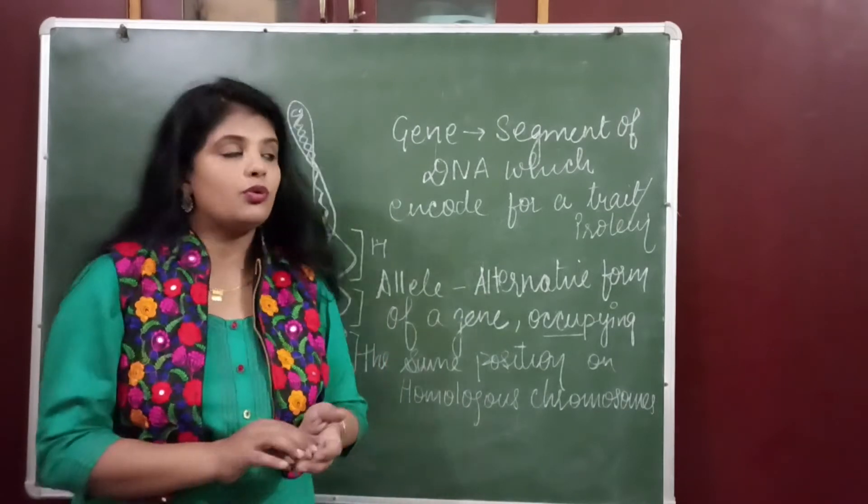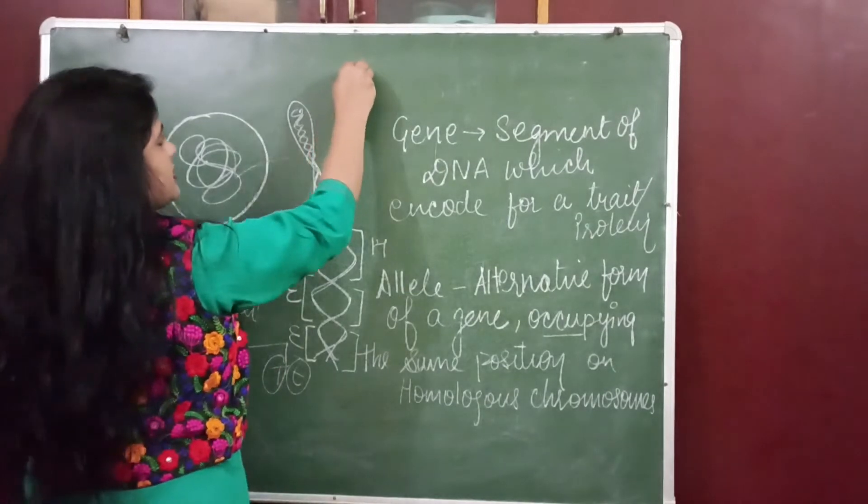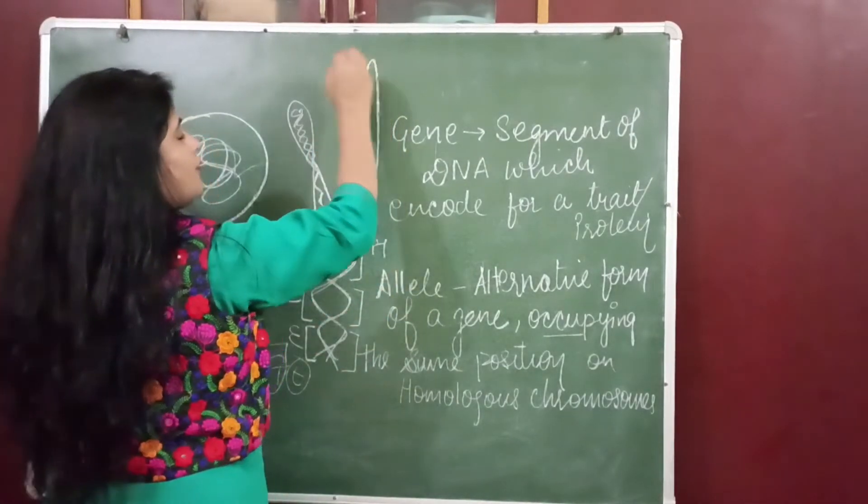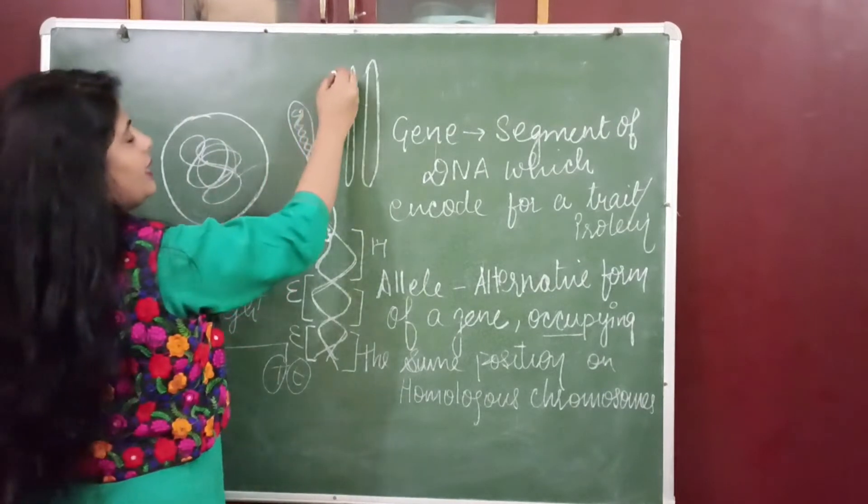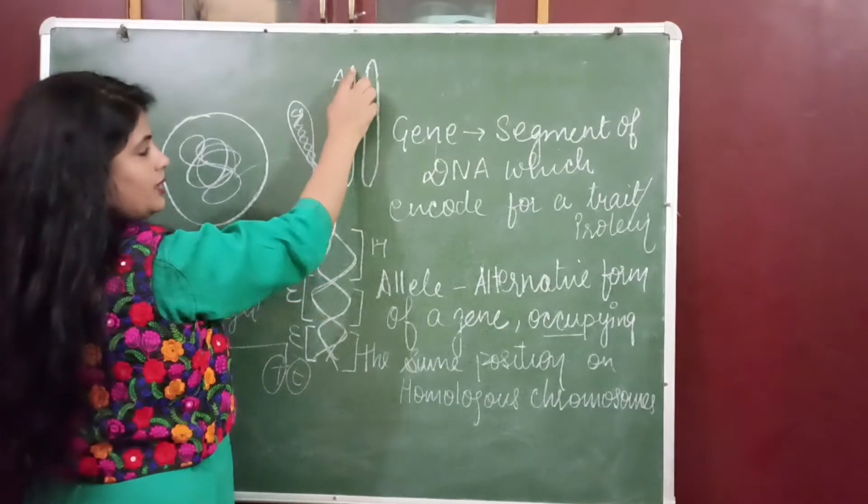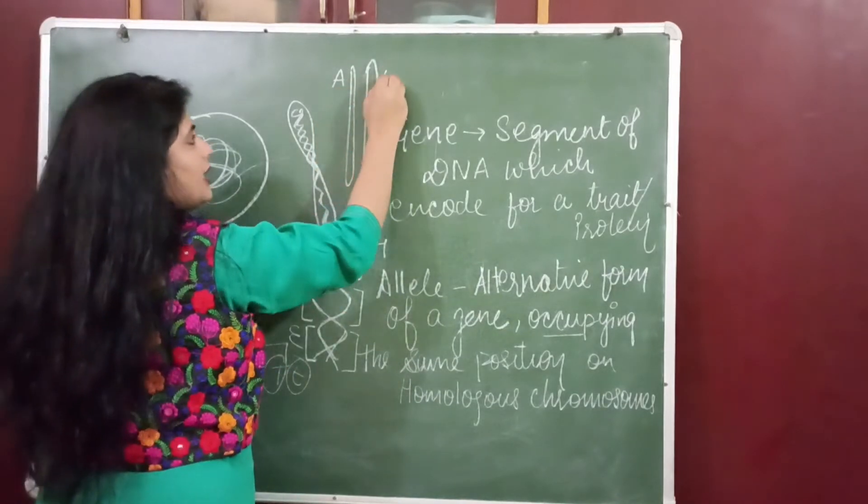Say this is one of the chromosome and this is a pair of homologous chromosomes. Here this is the allele for height on this chromosome, this is the allele for height on this chromosome.